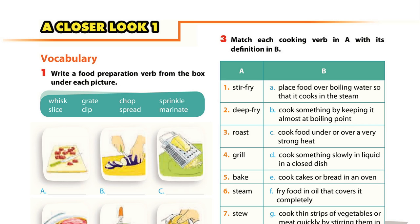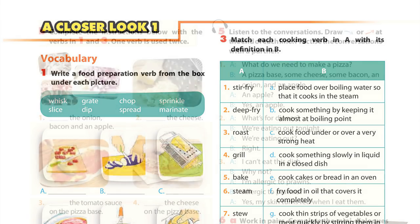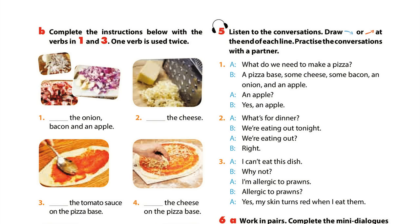Unit 7, Page 10: A Closer Look 1. Pronunciation. Activity 5: Listen to the conversations. Draw a falling arrow or rising arrow at the end of each line. Practice the conversations with a partner.